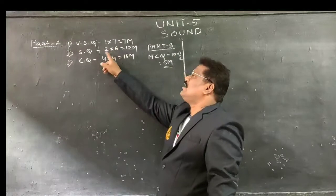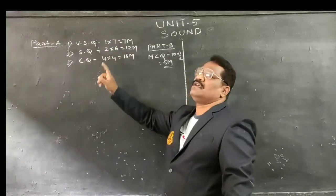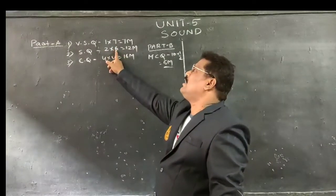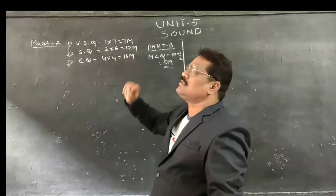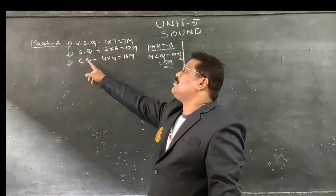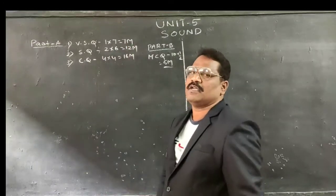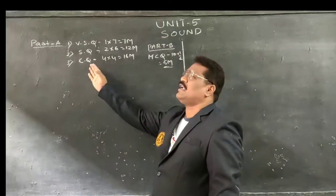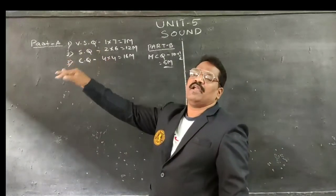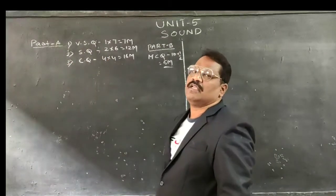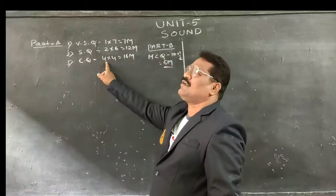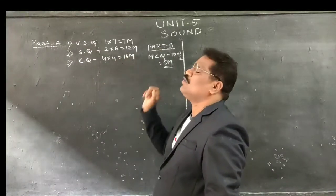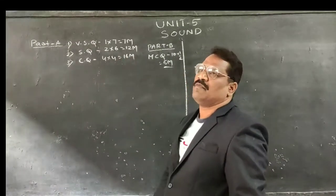The second section is short answers, in which 6 short answers will be there and you have to write all 6, giving a total of 12 marks. The third section has certain questions — 8 questions will be there, for each question there will be an internal choice, therefore 4 questions you have to write, totaling 4 times 4 equals 16 marks.